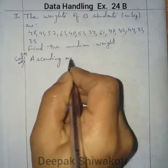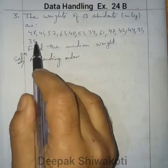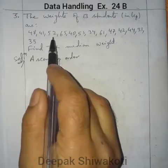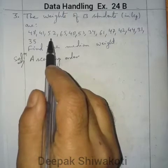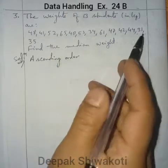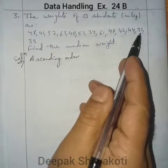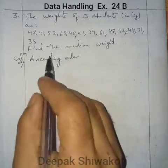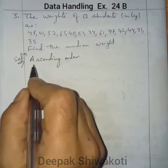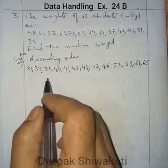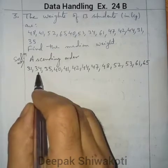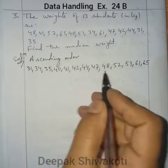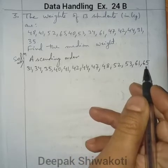We will see the lowest and highest values among all the weights, then arrange them. The lowest is 31 and the highest is 65. Arranging from 31 to 65 in ascending order: 31, 34, 35, 40, 41, 42, 44, 47, 48, 52, 53, 61, 65.